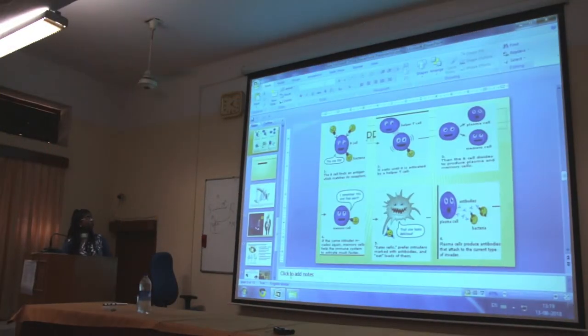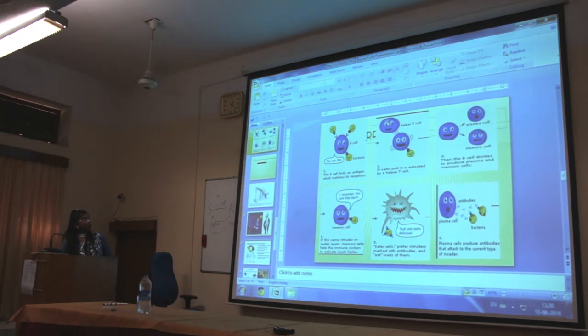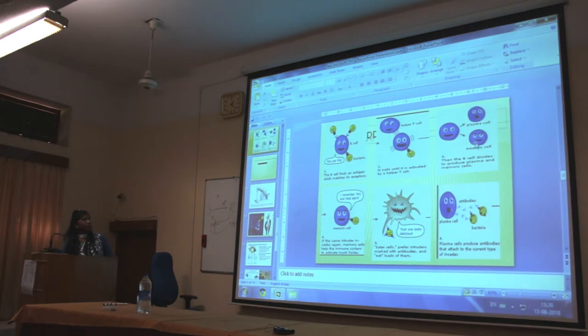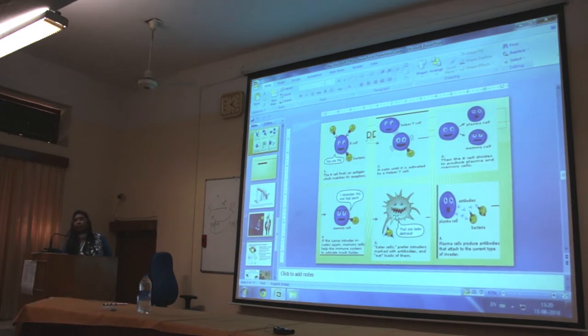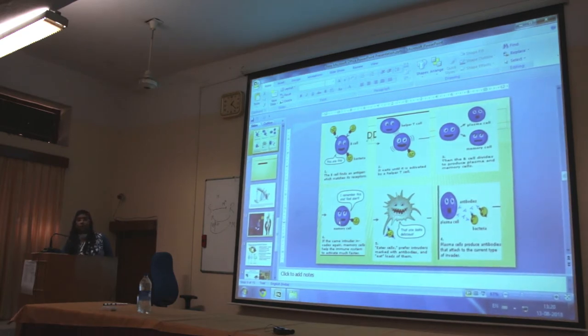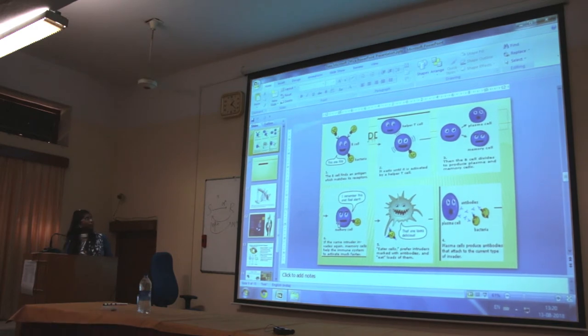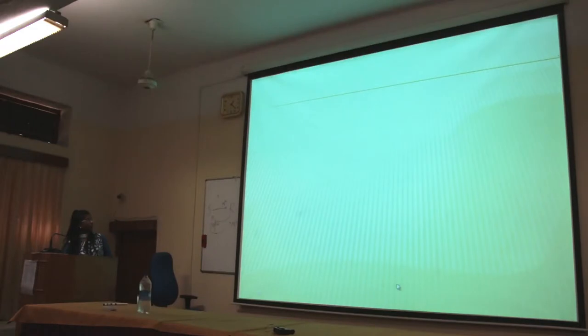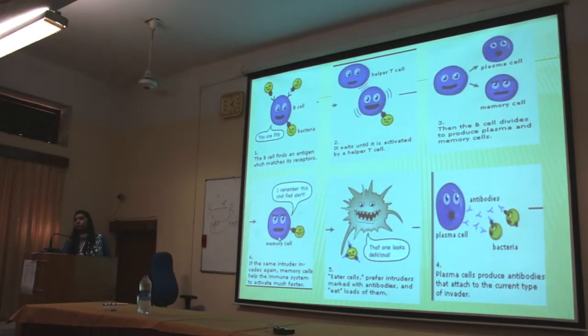Coming back to the presentation: a B cell recognizes the antigen, T cells help it, and it produces plasma cells and memory cells. The plasma cell secretes antibodies, which attach to the antigen, and the antigen is taken up and eliminated by phagocytic cells. The memory cells are stored in the body. When the antigen attacks a second time, memory cells are directly activated for a quick response — the entire chain of processes is not repeated. The first time there is a slow response; the second time, encountering the same antigen gives a quick response and it is eliminated rapidly.